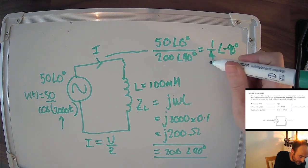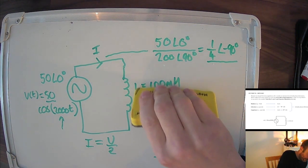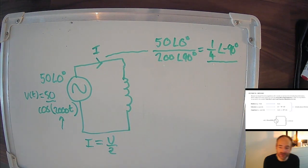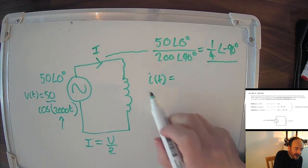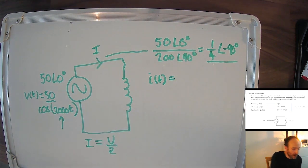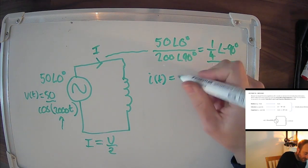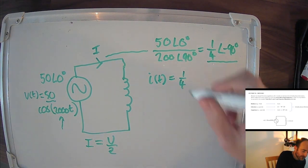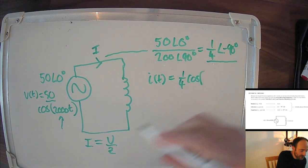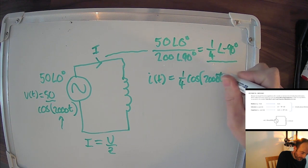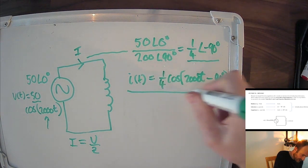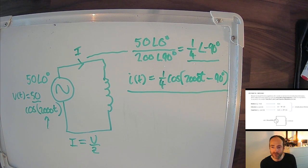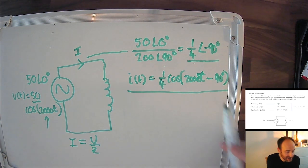The last step is to write this current in the time domain. Since the amplitude is 0.25 (250 milliamps) and we're using cosine with the same frequency, i(t) = 0.25 cos(2000t − 90°). This is much more powerful than using reactance — it's given us not just the amplitude but the phase information as well.